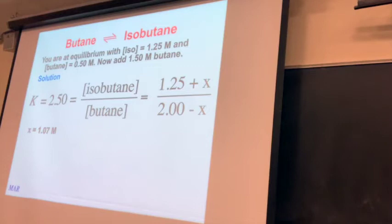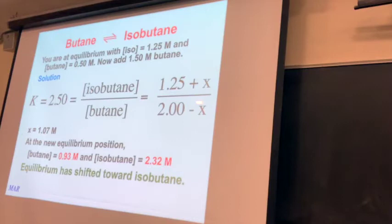Setting the equilibrium expression equal to K = 2.5: (1.25 + X) / (2 - X) = 2.5. Multiplying both sides by (2 - X): 2.5(2 - X) = 1.25 + X. Solving for X gives X = 1.07. So the new butane concentration is 2 - 1.07 = 0.93, and the new isobutane concentration is 1.25 + 1.07 = 2.32. The equilibrium has definitely shifted to the products.